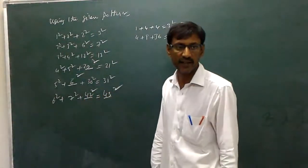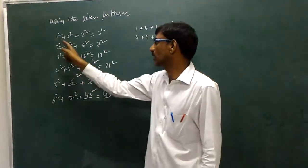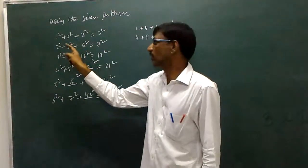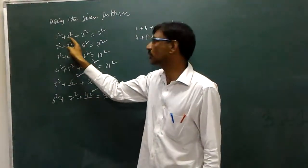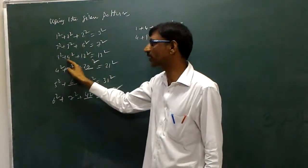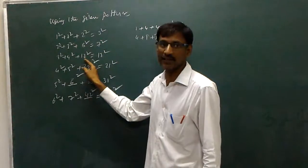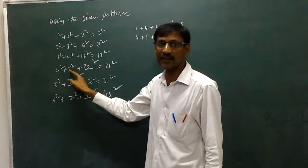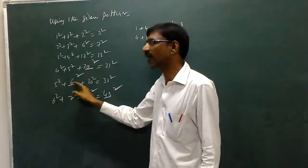Can I explain again? Yes sir. Two ones are two square. Two threes are six square. Three fours, four fives twenty square. Six fives thirty square.